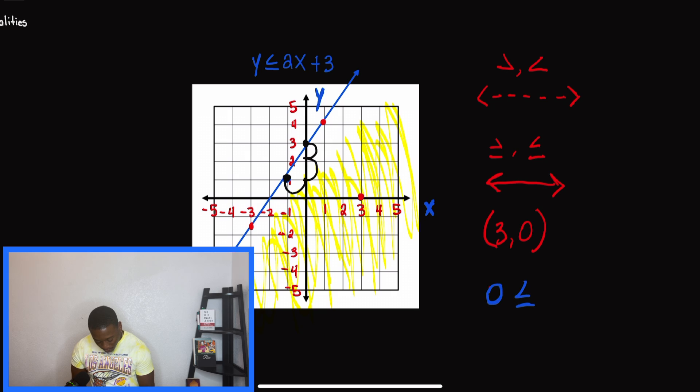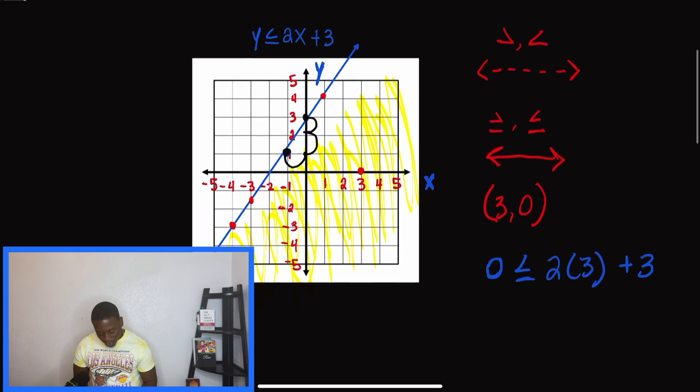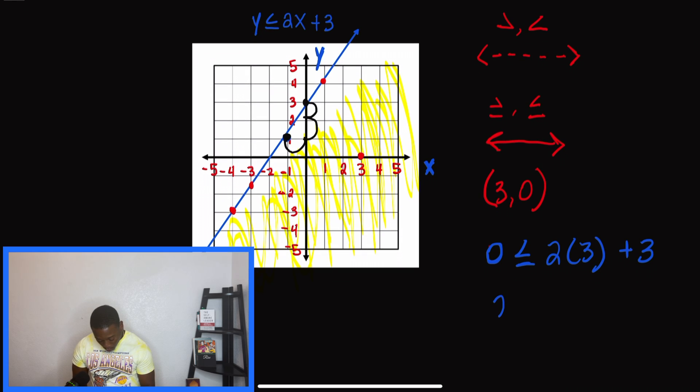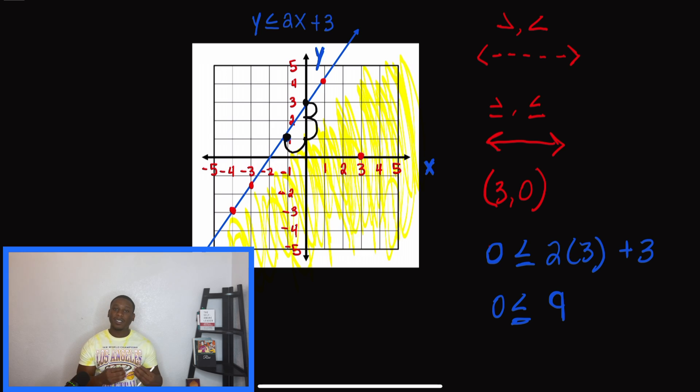So 0 ≤ 2 times x. We know x is now 3, and we add 3 to that. So our answer is 0 ≤ 6 + 3, which is 9. When we look at this answer, 0 ≤ 9, we know that is correct. So we would shade in the same area as that point.